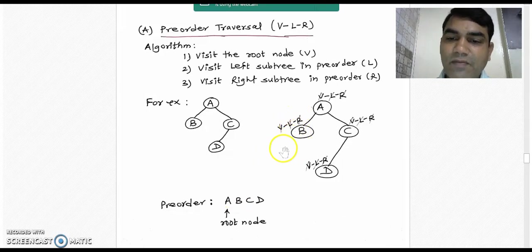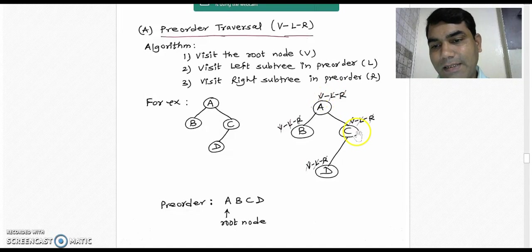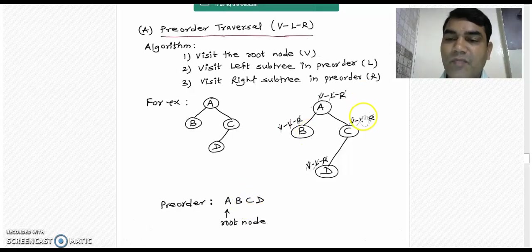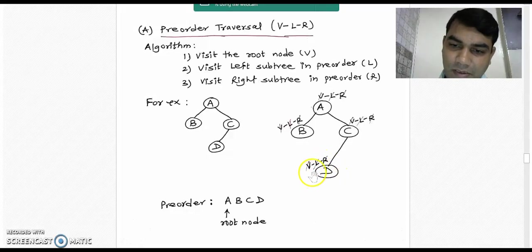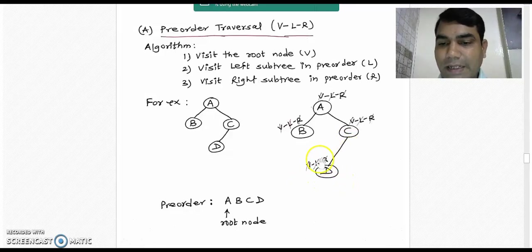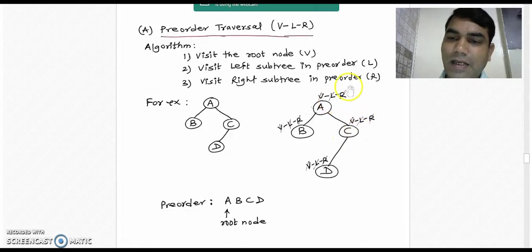There is no left subtree for node B, so we cut L. There is also no right subtree for node B, so we cut R. The left subtree of node A is fully visited, so we cut L on node A. Then R remains, indicating we go to the right subtree — node C. On top of node C we have VLR. We cut V and write C into the pre-order traversal sequence. Then L indicates we go to node D, where VLR is also written. We cut V and write D. There is no left or right subtree for node D, so we cut L and R. The left subtree traversal of node C is over, so we cut L. There is no right subtree for node C, so we cut R. Finally we cut the R of node A.